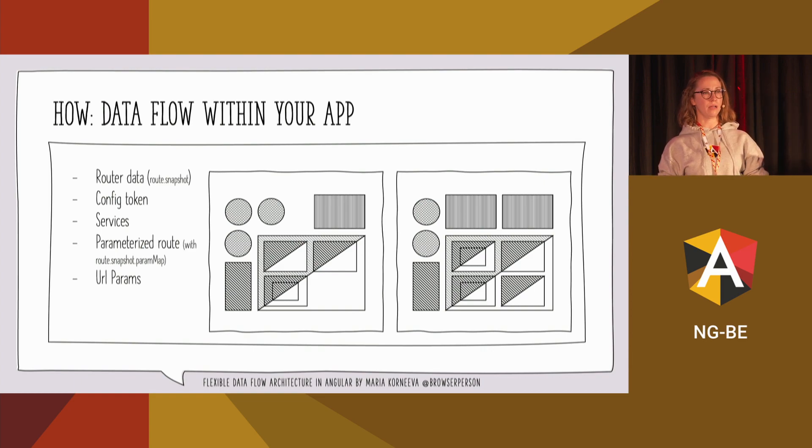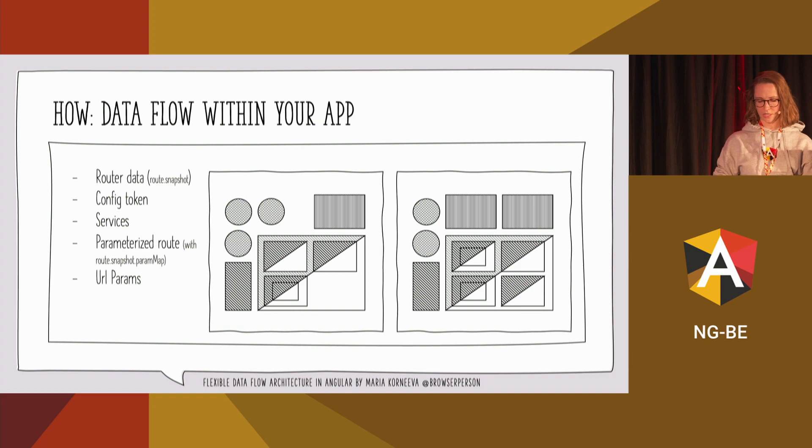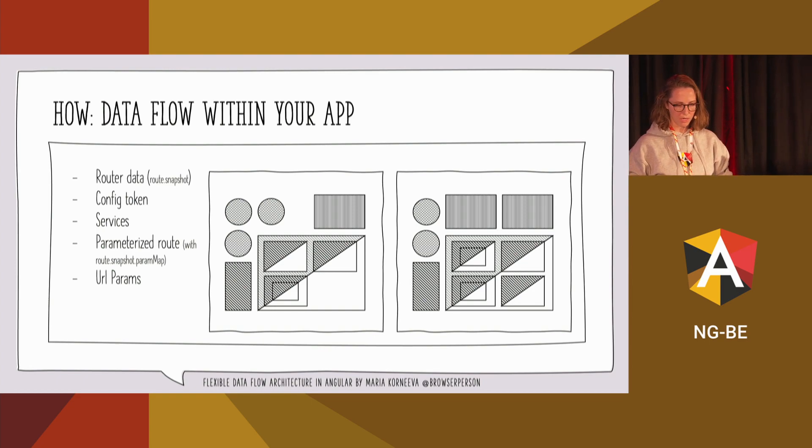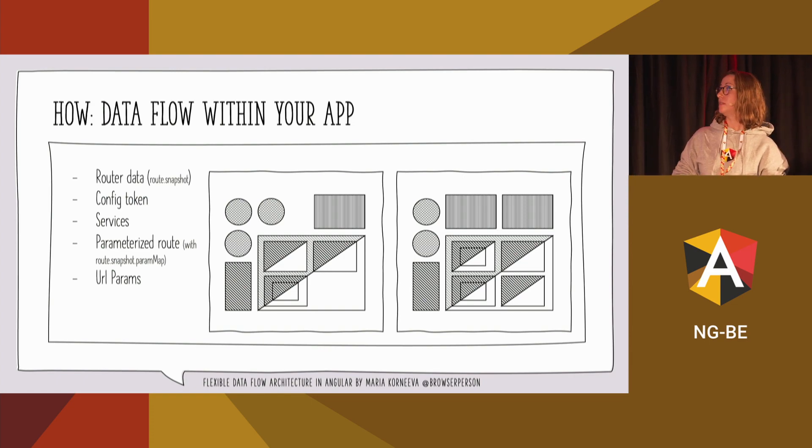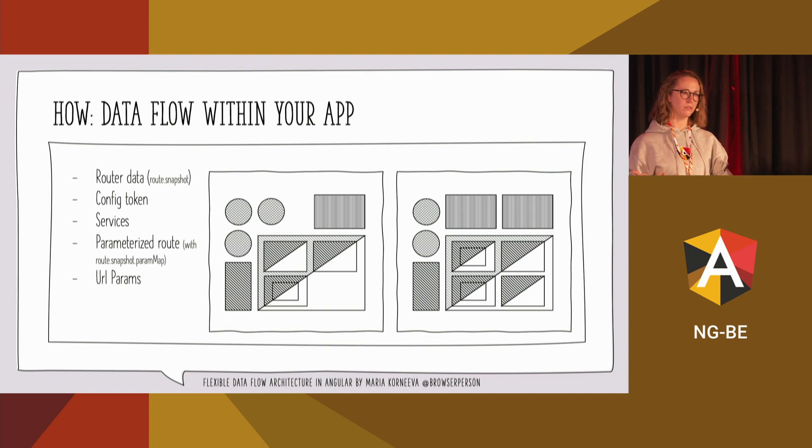At the app level, you have a couple more options. If you want to share data between remote components, you have router data so you can access it via snapshot. For example, in my current project, we place the title of a component in the snapshot, and using the app title service, we update the page title which is bound to this route. You can also share data using injection token for configuration data. You still have services. You might use parameterized routes like product slash details slash product ID. And you have the good old URL parameters.